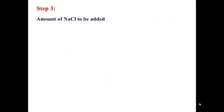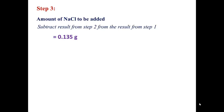Step 3: compute the amount of sodium chloride to be added. Subtract the step 2 result from step 1: 0.135 grams minus 0.015 grams equals 0.12 grams of sodium chloride equivalent.